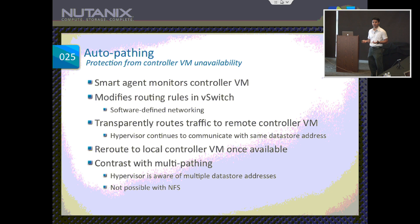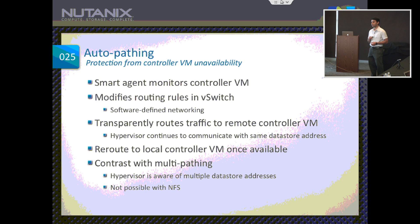You don't have to move your guest VMs to a different node to make them available — they can continue operating. We have a smart agent that runs along with the hypervisor, alongside ESX. It monitors the controller VM, and any time the controller VM goes down, the smart agent modifies the routing rules in the virtual switch, transparently sending requests meant for the local controller VM to a remote controller VM. ESX doesn't even blink — it doesn't even realize this is happening.